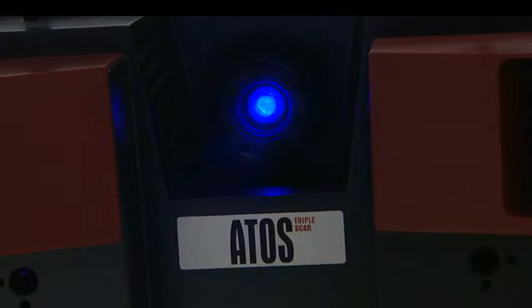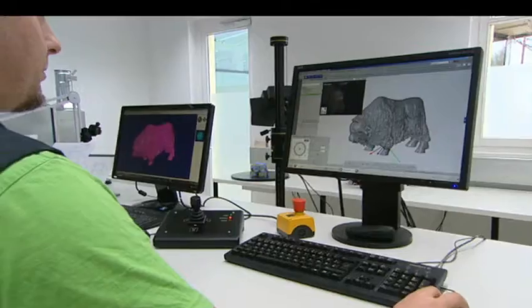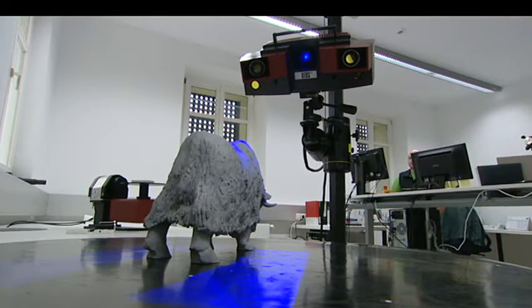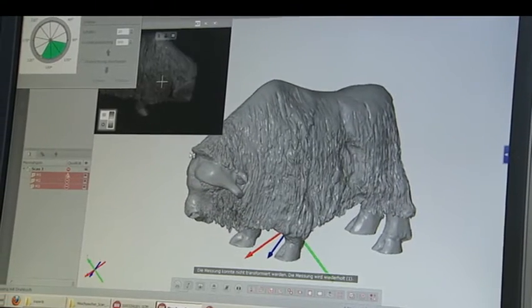This musk ox is supposed to be reproduced. The 3D scanner makes it possible. First, the body of the ox is grid scanned and measured by a laser beam, creating a computer image of it. The result is an exact image of the outside, comparable to a black and white photograph.